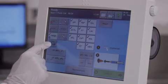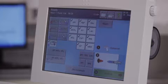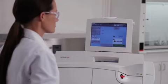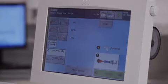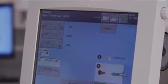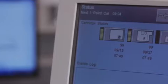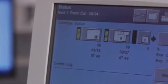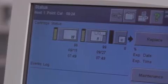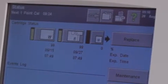To further speed workflow, commonly requested panels may be predefined and readily accessible from the main screen. The banner at the top of the main screen indicates the time to the next calibration, the type of calibration, the percentage of reagent remaining in the cartridge, and other various routine functions.